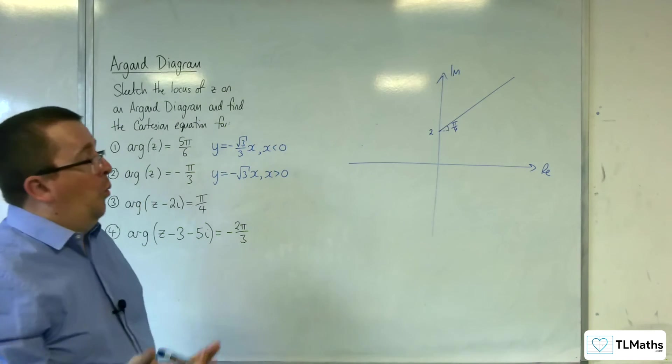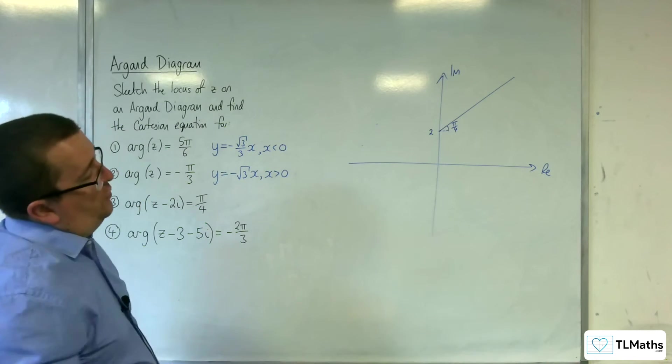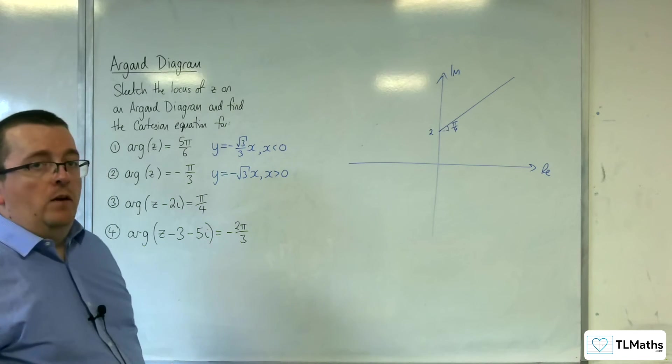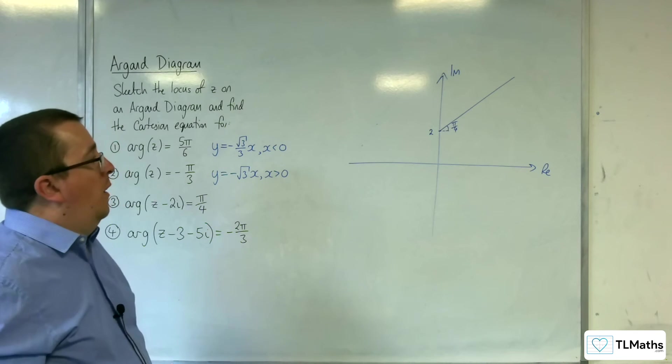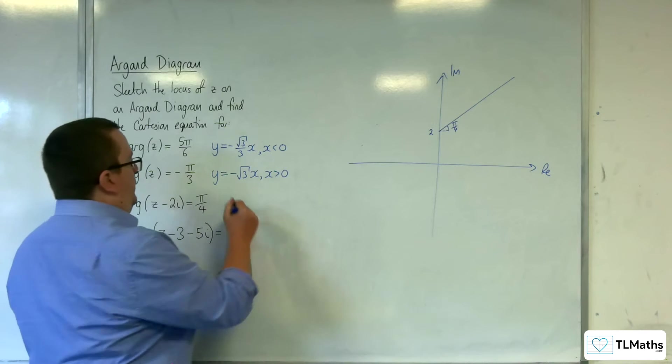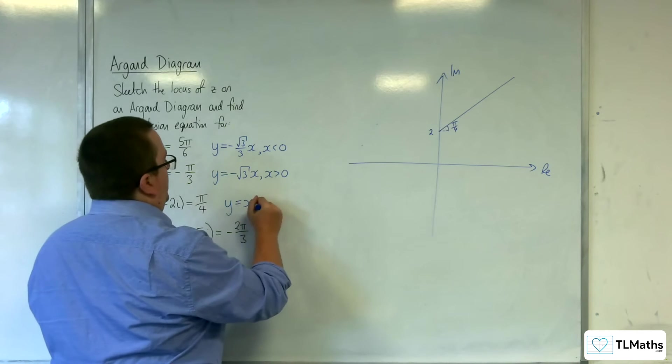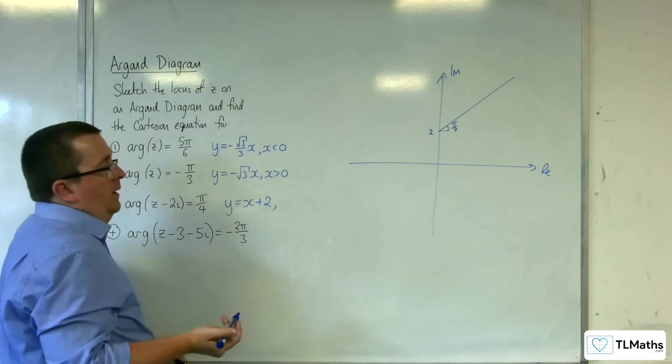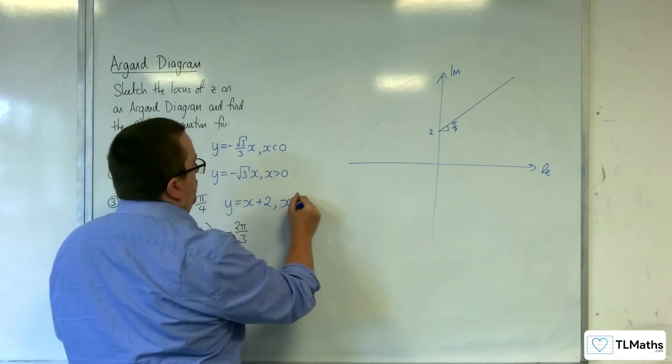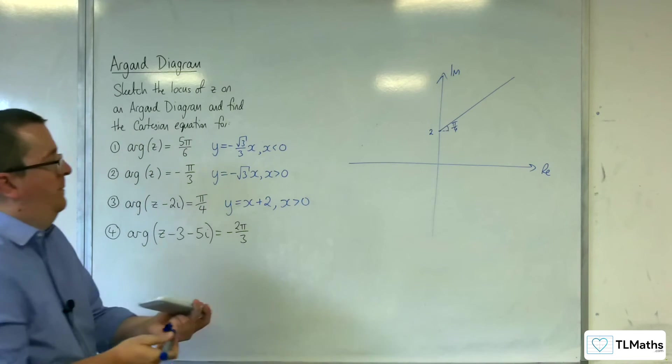Now, tan of π over 4 is just 1. And it's going through 2 on the y axis. So, y equals x plus 2 would be the equation of your line, where x is greater than 0. So, that's number 3.